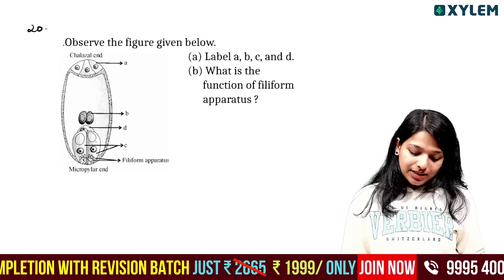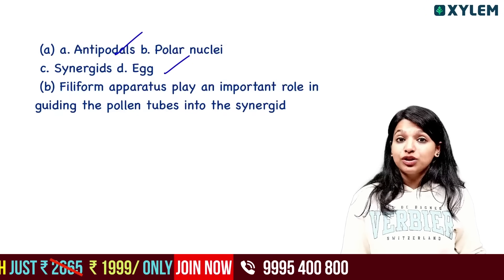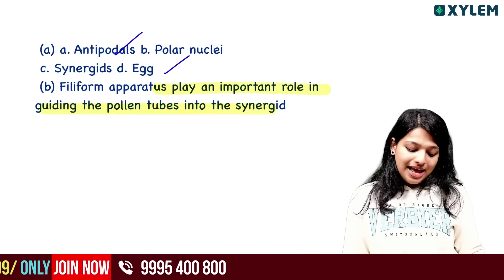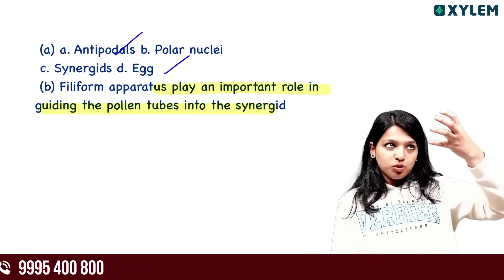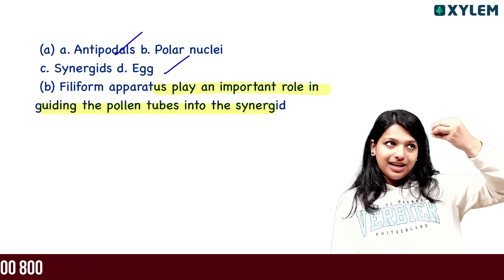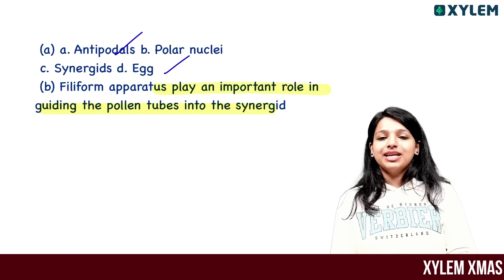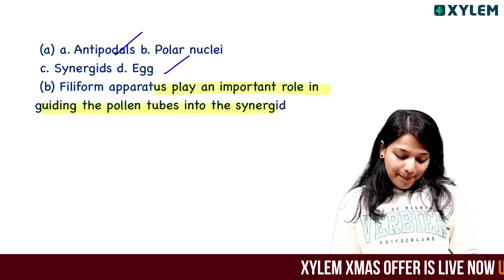What is the function of the filiform apparatus? They play an important role in guiding the pollen tube. The pollen tube is guided by chemicals produced by the filiform apparatus.